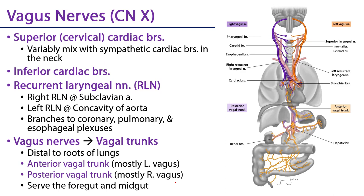Coming off the cervical region of the vagus nerves as they descend the neck there are superior cardiac branches. These superior cardiac branches often join and mix amongst the cardiac branches from the cervical sympathetic ganglia to also descend the neck. Lower in the neck, closer to the root of the neck, there are inferior cardiac branches also descending. There will also be branches from the recurrent laryngeal nerves descending into the cardiac, pulmonary, and esophageal plexuses.